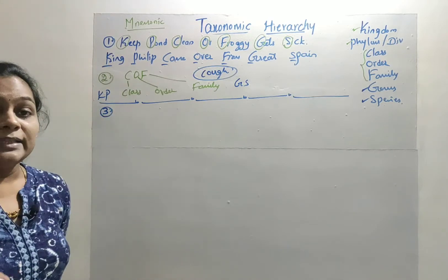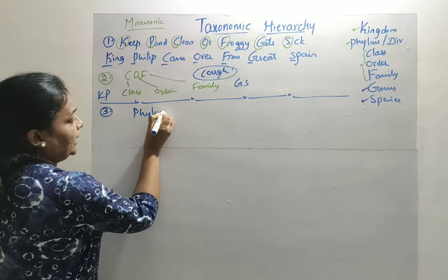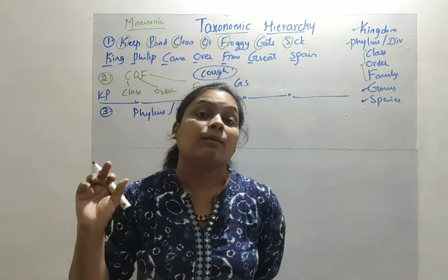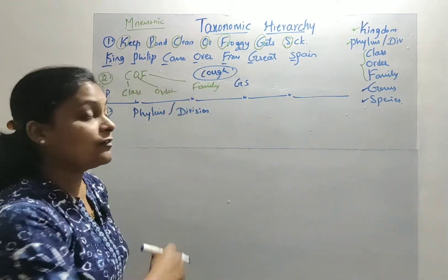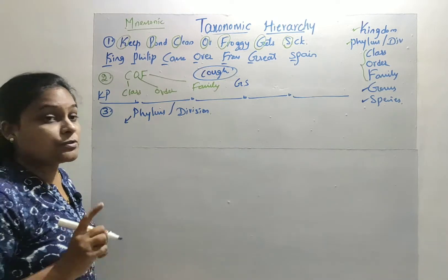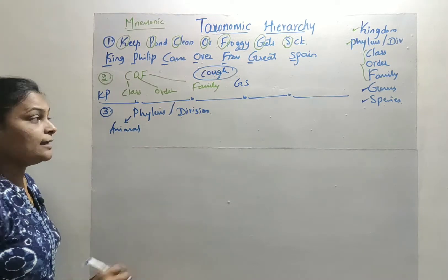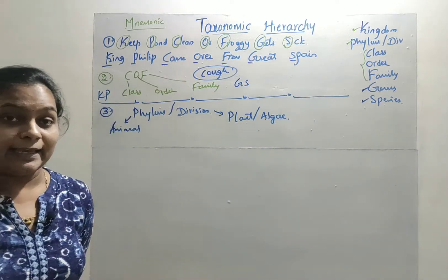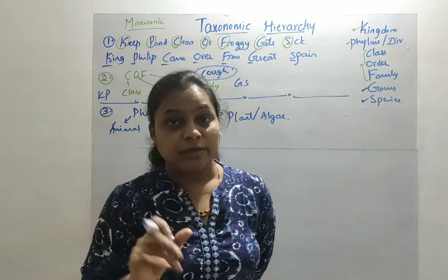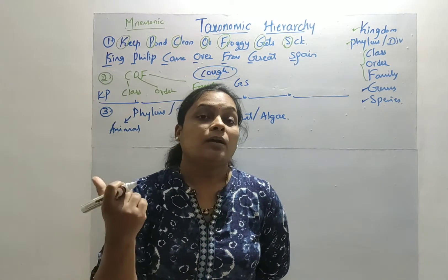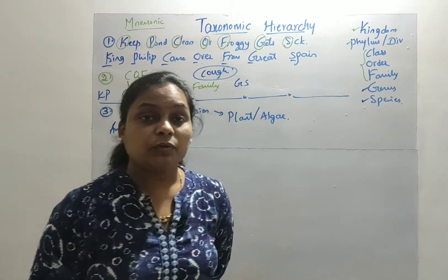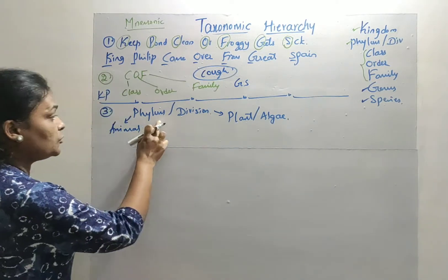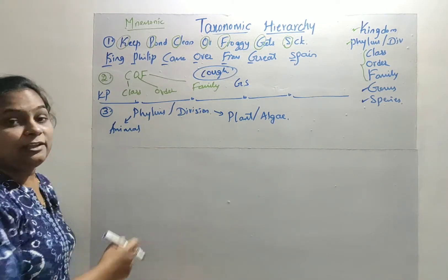The third trick is about whether to use the word 'Phylum' or 'Division.' The term Phylum is usually used in animal classification, while Division is usually used for plant classification or algae classification. In an exam, if the question is about the animal kingdom, choose Phylum; if it is about the plant kingdom, choose Division.